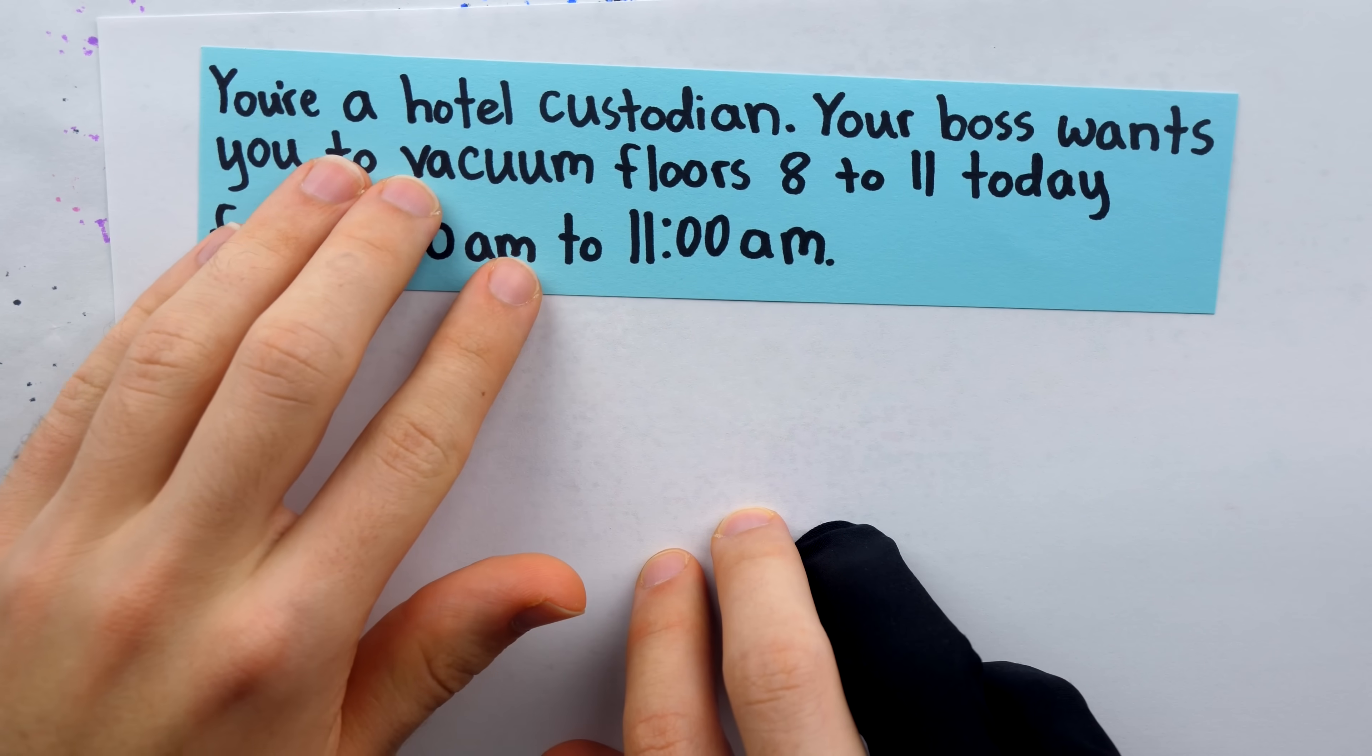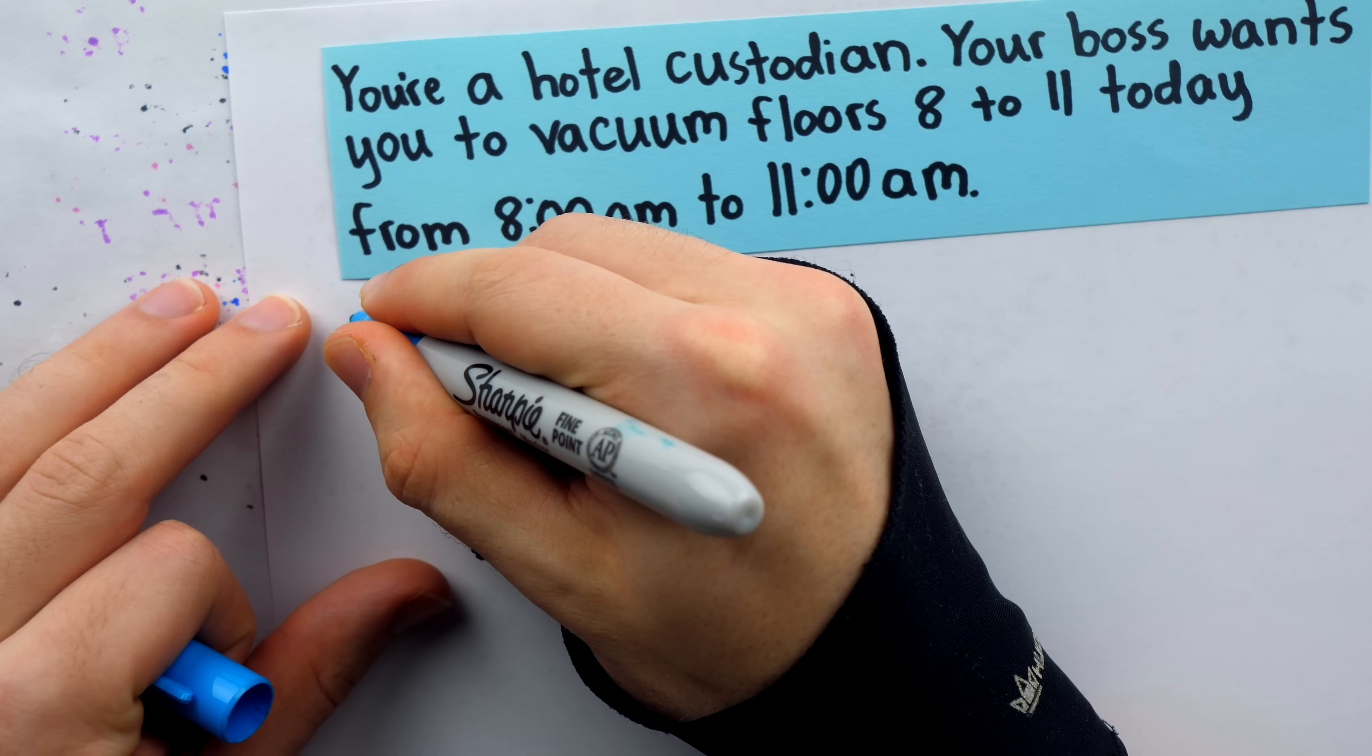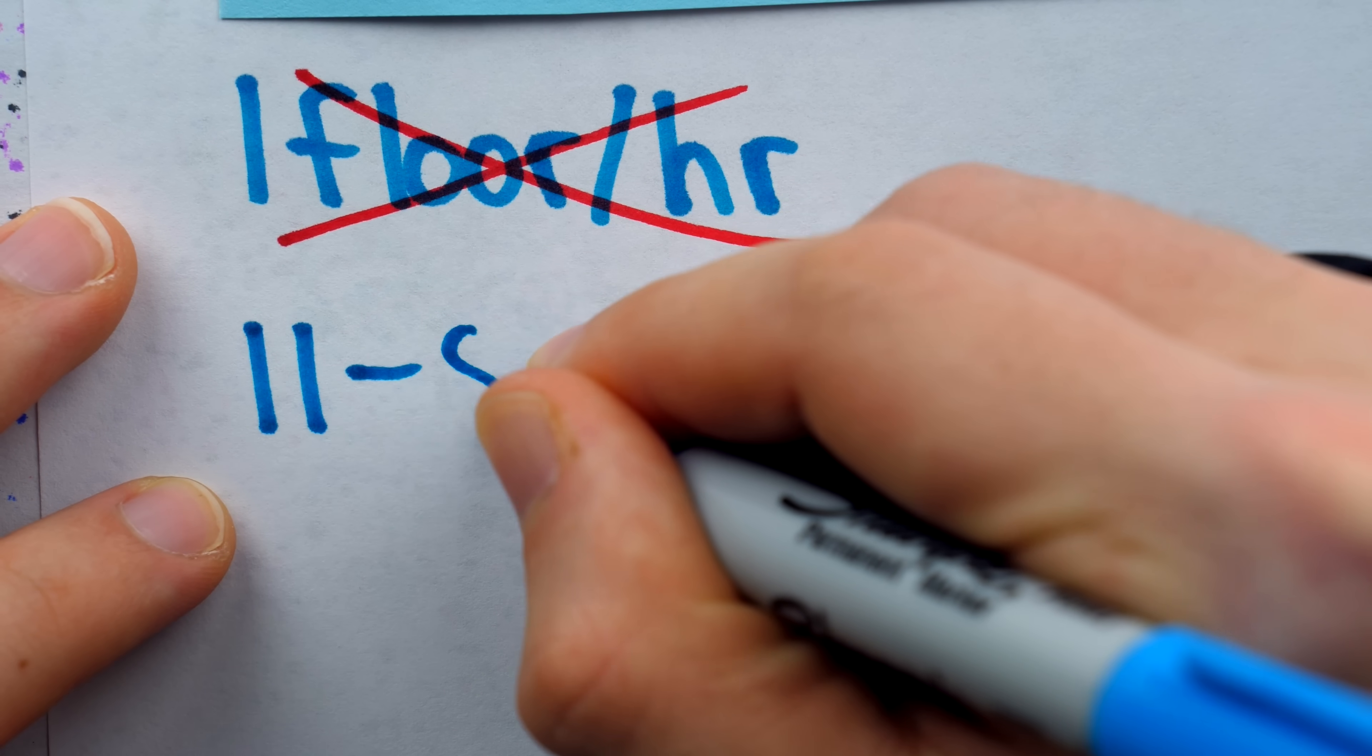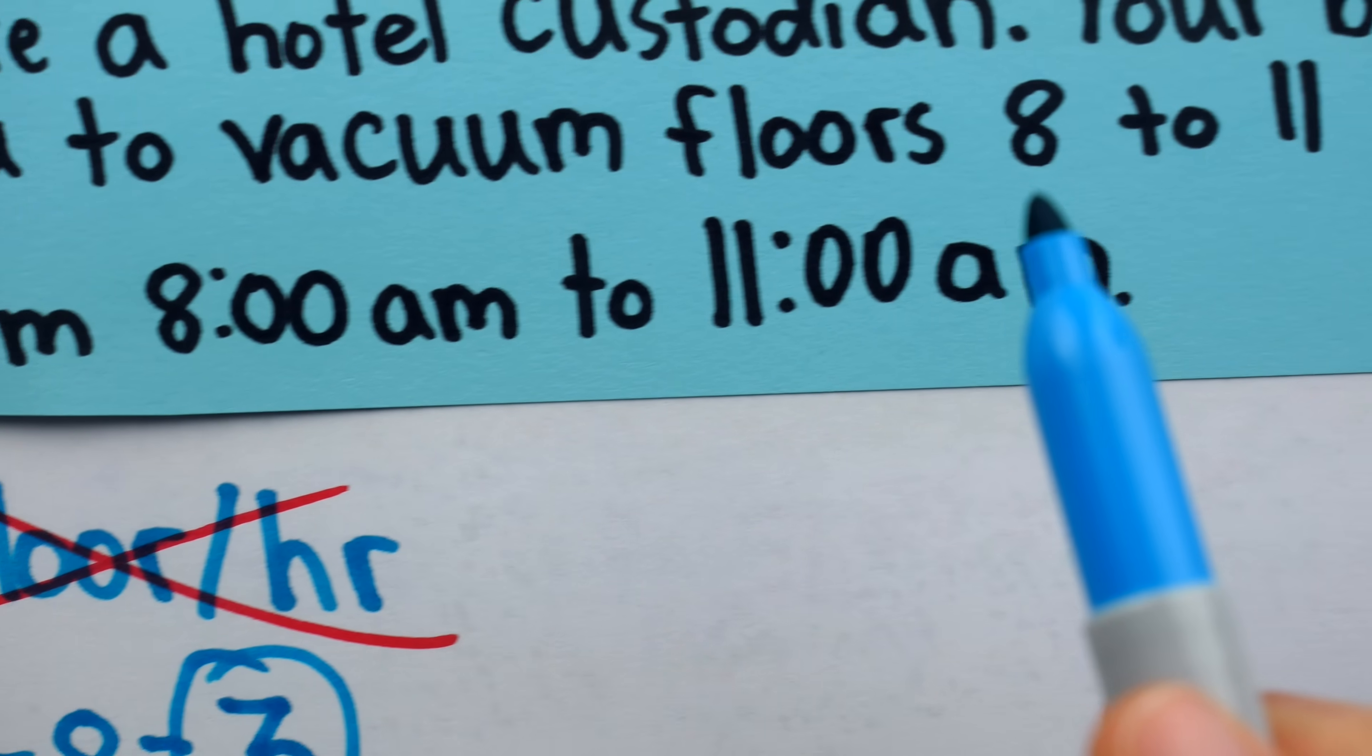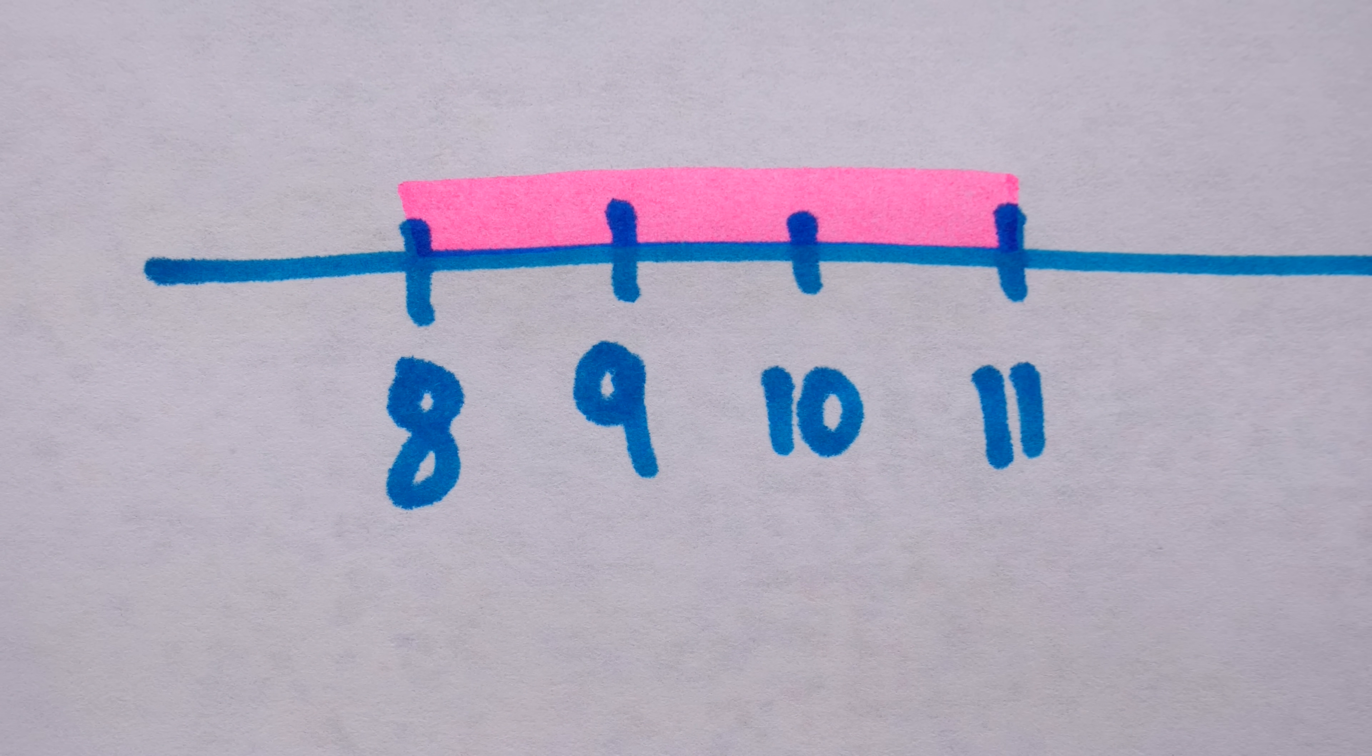I saw this example on betterexplained.com. You're a hotel custodian. Your boss wants you to vacuum floors eight to eleven today from 8am to 11am. And well, you're in luck. That's some really convenient math, right? You just have to vacuum one floor per hour. If only it is not so. You can do simple subtraction, 11 minus 8, to get the correct number of hours, three hours, because you're calculating a distance between times. But with the floors, you're counting labeled objects. So for them, 11 minus 8 isn't really relevant. You're not trying to count a distance or a span of anything. You're just counting floors, which happen to be labeled 8, 9, 10, 11.